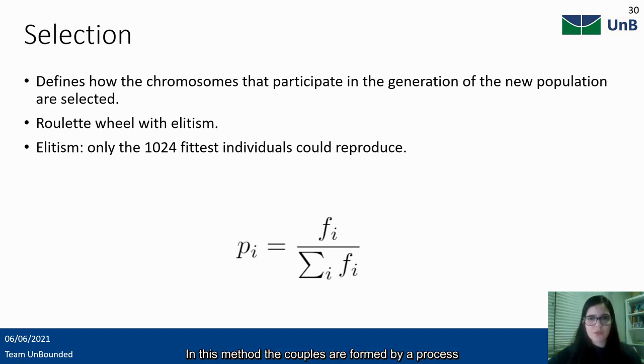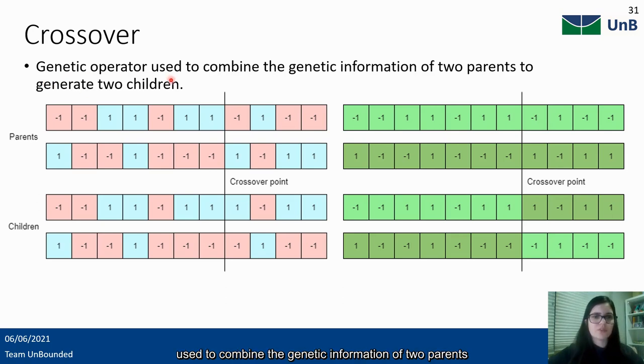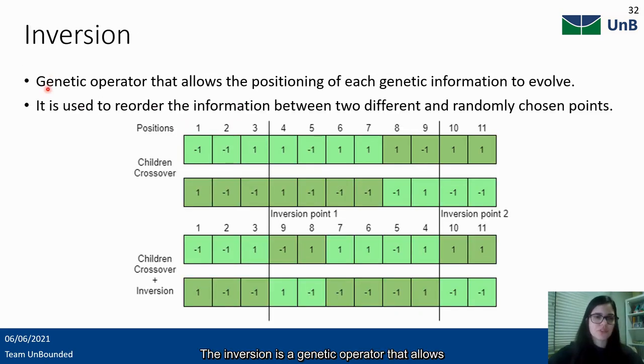In this method, the couples are formed by a process that is conceptually the same as spinning in one-armed roulette wheel, being the sizes of the holes the reflection of the selection probabilities. The probability is proportional to the individual's fitness function fI. So, the better the solution, the higher are its chances to form the offspring. The crossover is a genetic operator used to combine the genetic information of two parents to generate two children. They are formed by firstly applying the crossover operator with a probability of occurrence. In this work, the probability was 80%. The inversion is a genetic operator that allows the positioning of each genetic information to evolve. It is used to reorder the information between two different and randomly chosen points. In this work, it was applied with 30% probability of occurrence.